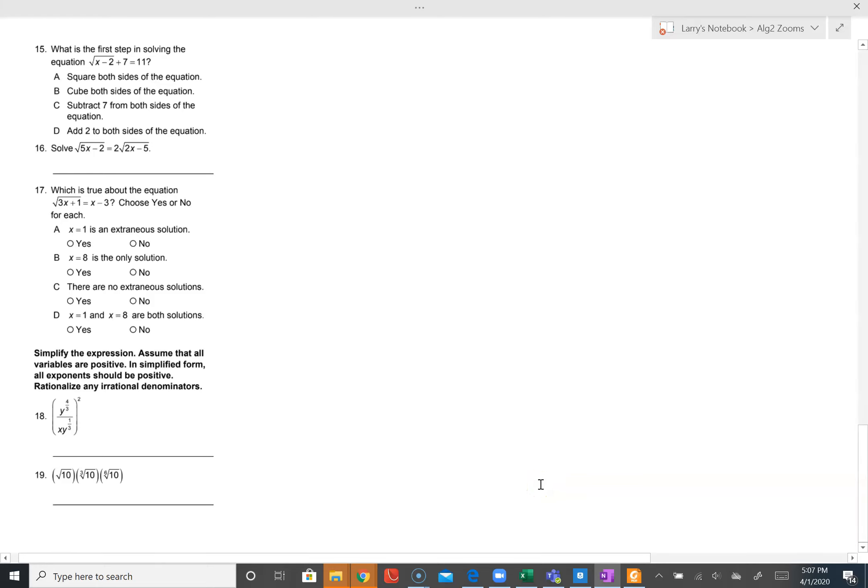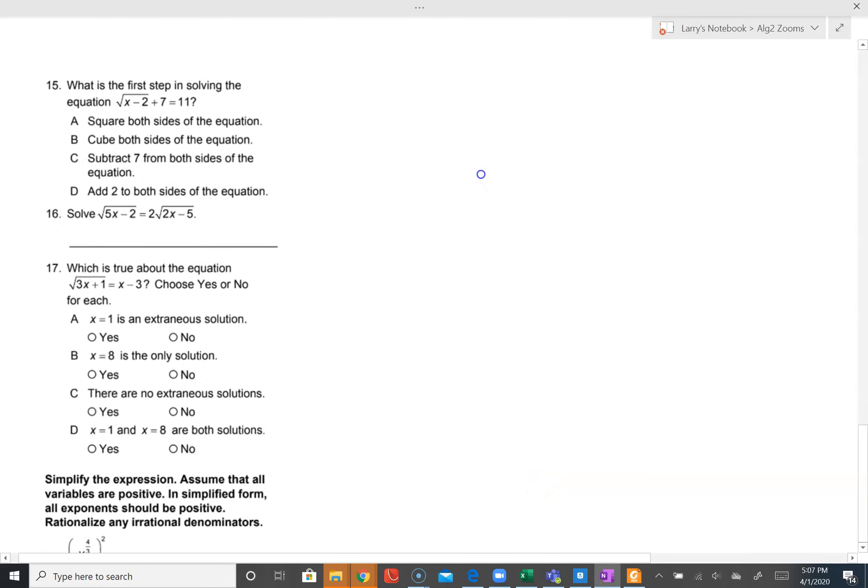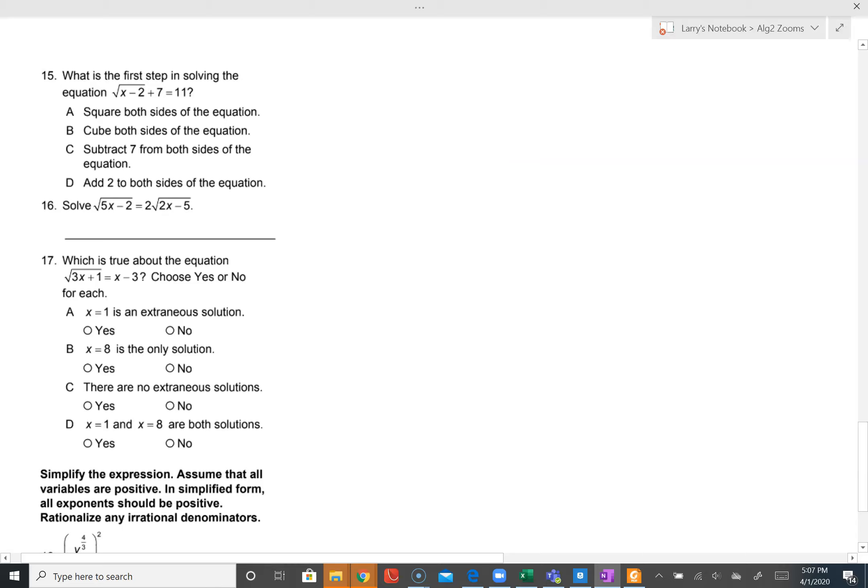Alright, this is the final part three of the videos over the unit test review. Number 15, what is the first step in solving an equation? Square root of x minus two plus seven equals eleven.